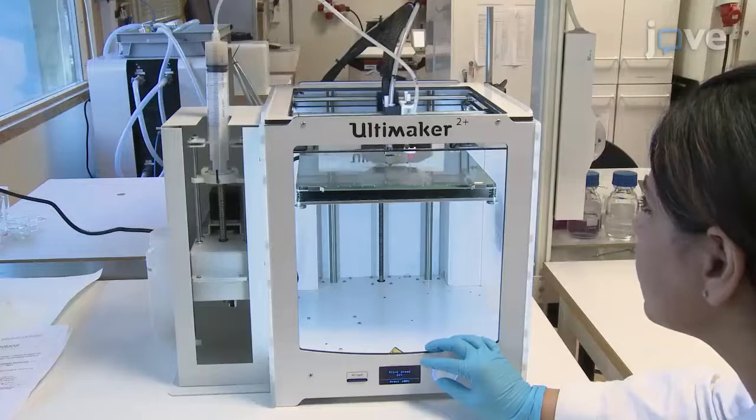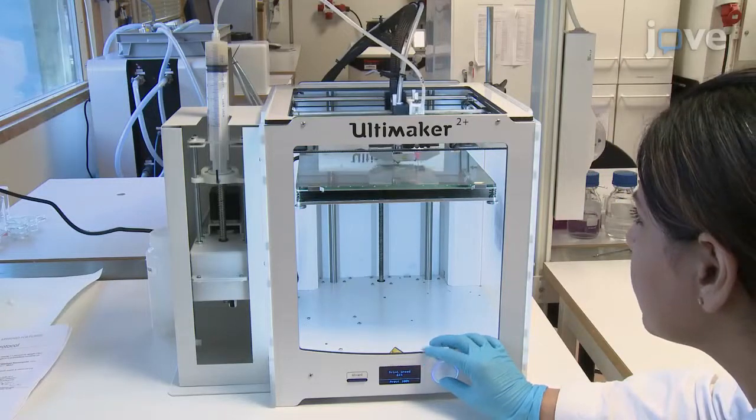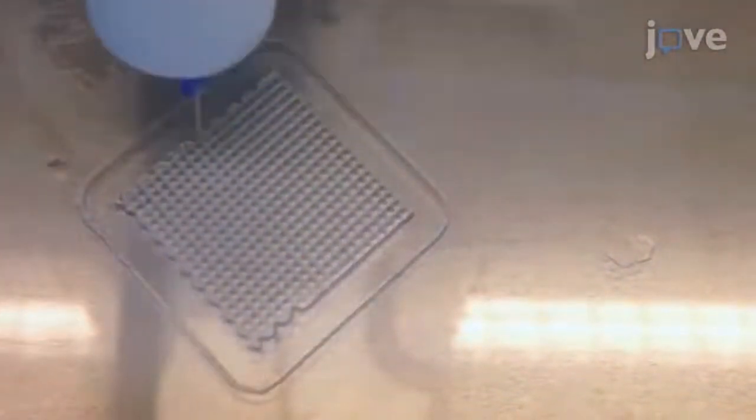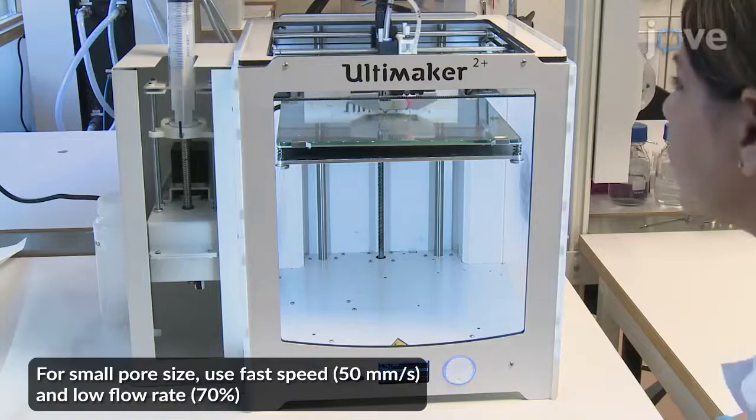From the SD card, select the saved files for uniform and gradient porosity scaffolds and start printing. If needed, adjust the speed and flow rate accordingly.